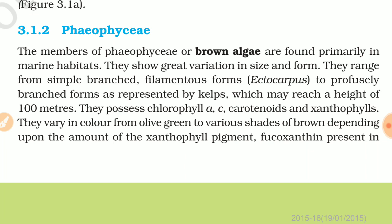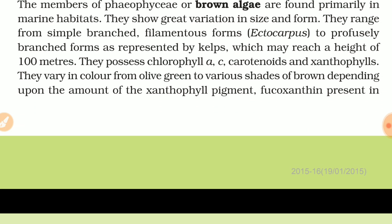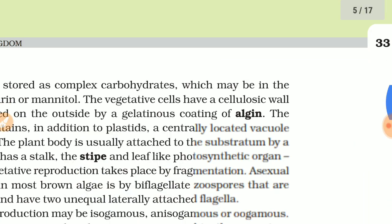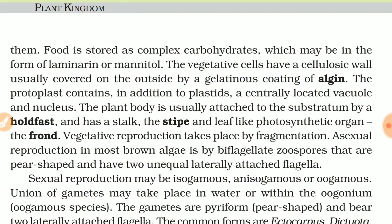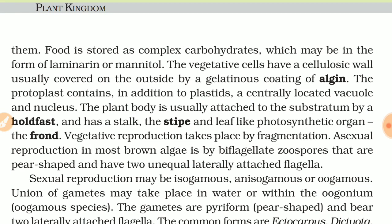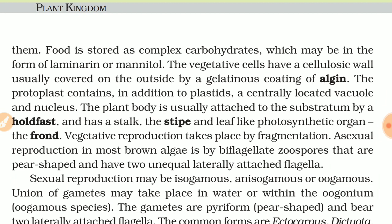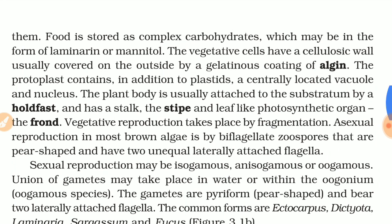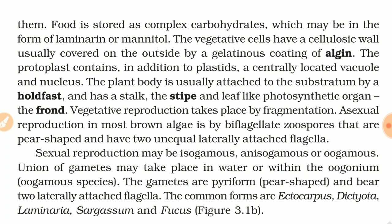Brown algae possess chlorophyll A and C, carotenoids, and xanthophylls. They vary in color from olive green to various shades of brown depending upon the amount of xanthophyll pigment and fucoxanthin present.